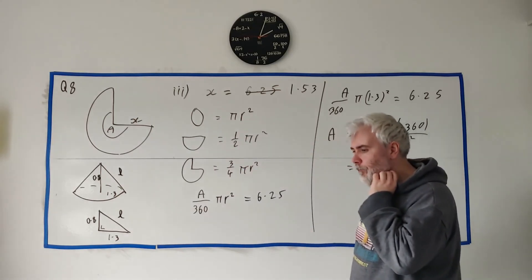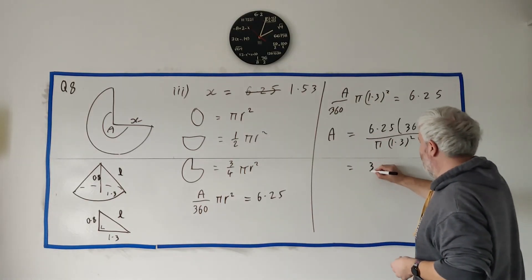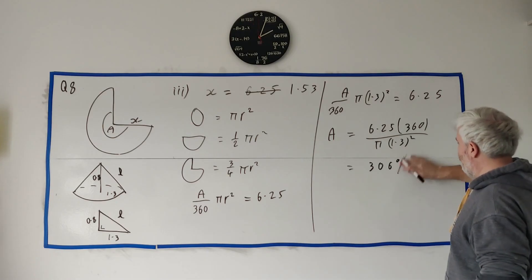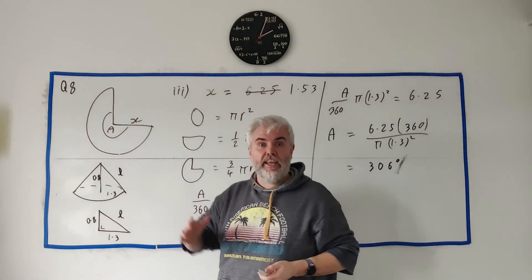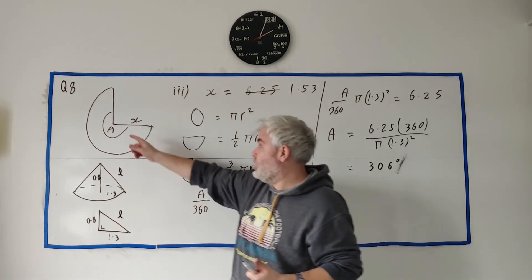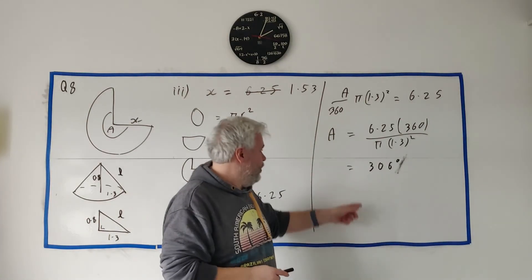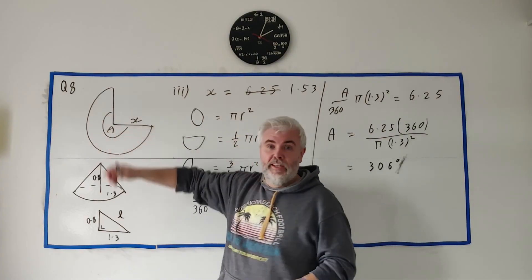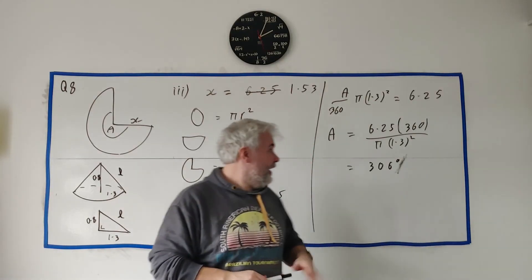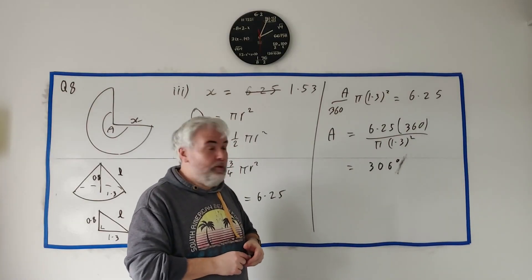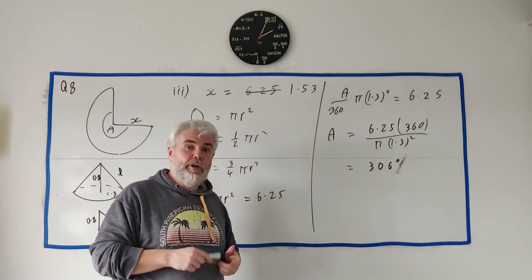Putting that into a calculator gives A equals 306 degrees. Always check that your answer looks roughly right — the picture shows a large sector, and 306 degrees out of 360 looks about right. If you'd gotten 10 degrees that would clearly be wrong. So 306 degrees is our final answer. If you have any follow-up questions, please put them in the comments below — I'll do my best to get back to you. Thanks for watching and have a great day.